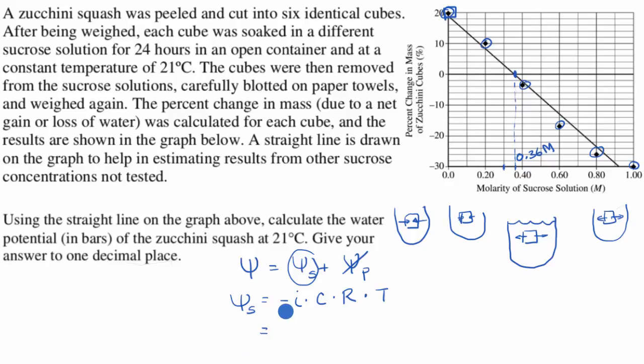So this is going to be equal to negative, I already said that this i is one, because the sucrose just stays sucrose when you put it in water, so negative one times 0.36 moles per liter times r, and if you're doing something like an AP test, they actually give you these formulas and they even give you r as being 0.0831 liter bars per mole Kelvin.